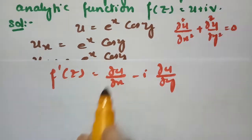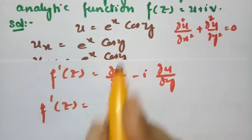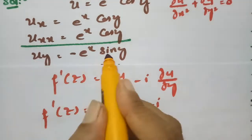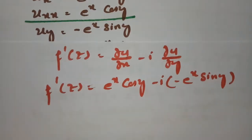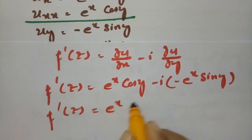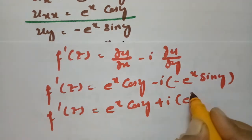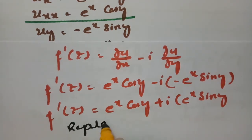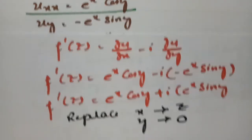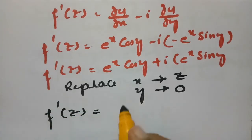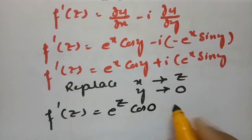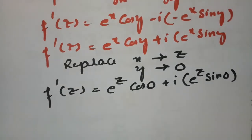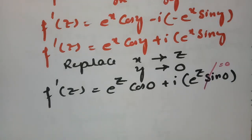Now substituting: ∂u/∂x = eˣ cos(y) and ∂u/∂y = −eˣ sin(y). So f'(z) = eˣ cos(y) − i(−eˣ sin(y)) = eˣ cos(y) + i·eˣ sin(y). According to the Milne-Thomson method, we replace x by z and y by 0. So cos(0) = 1 and sin(0) = 0, giving f'(z) = eᶻ.